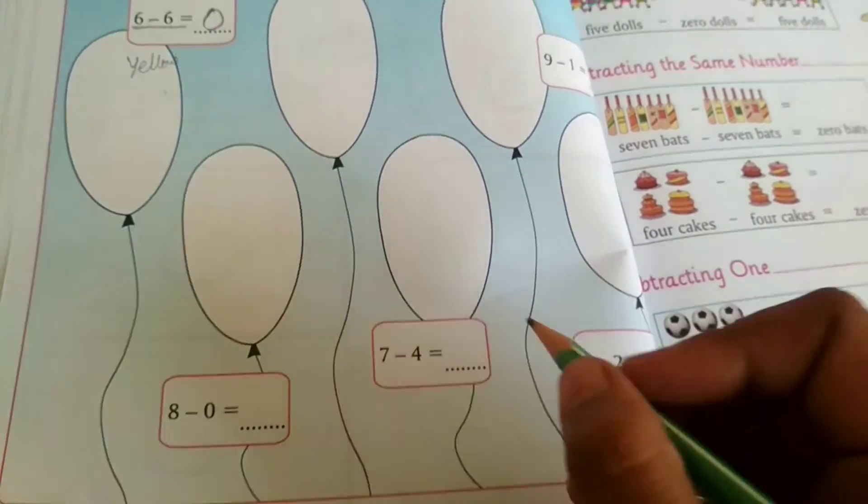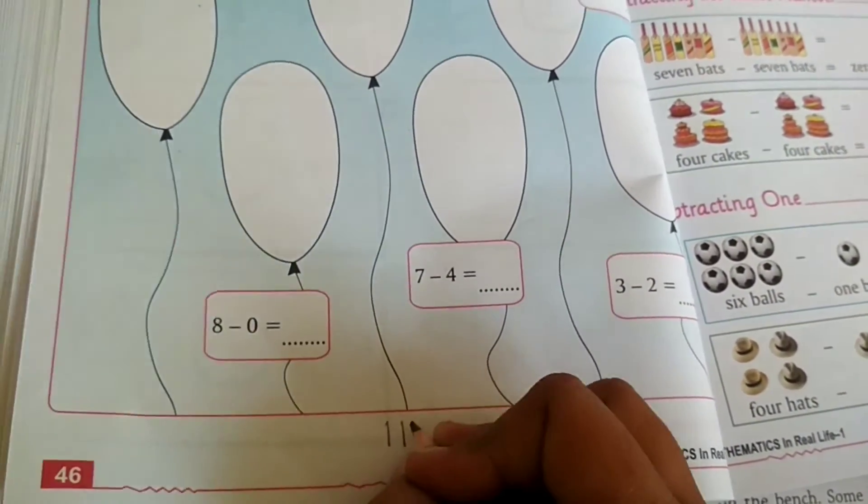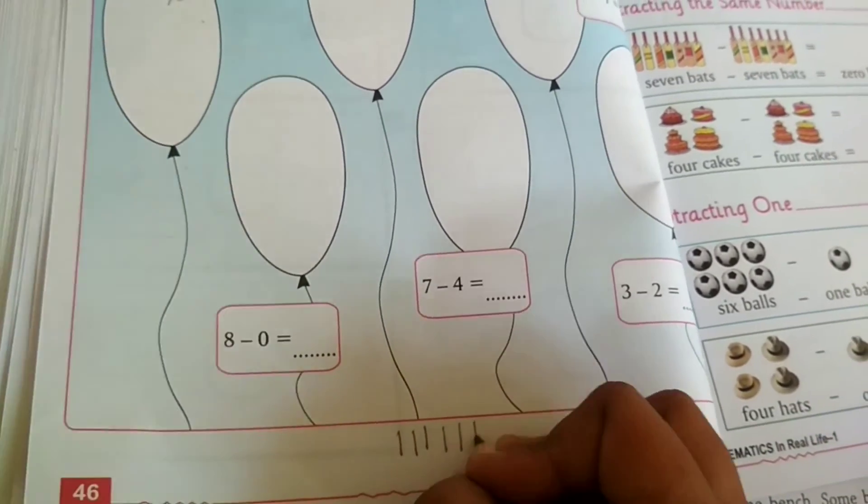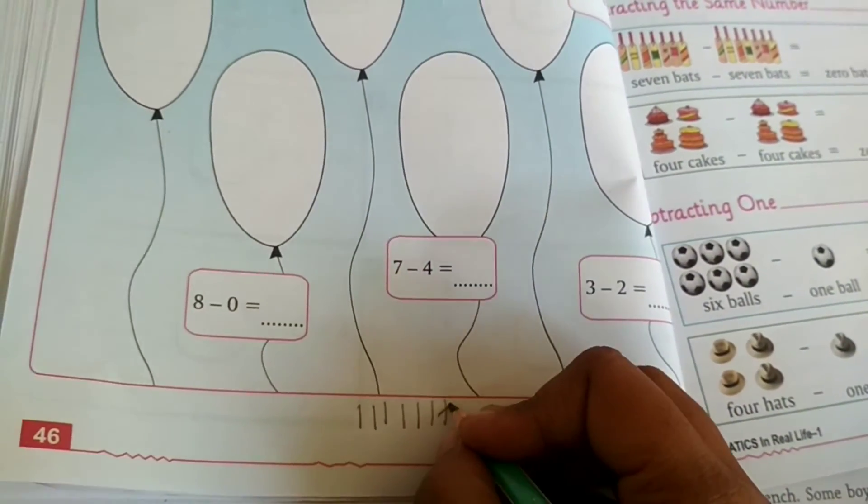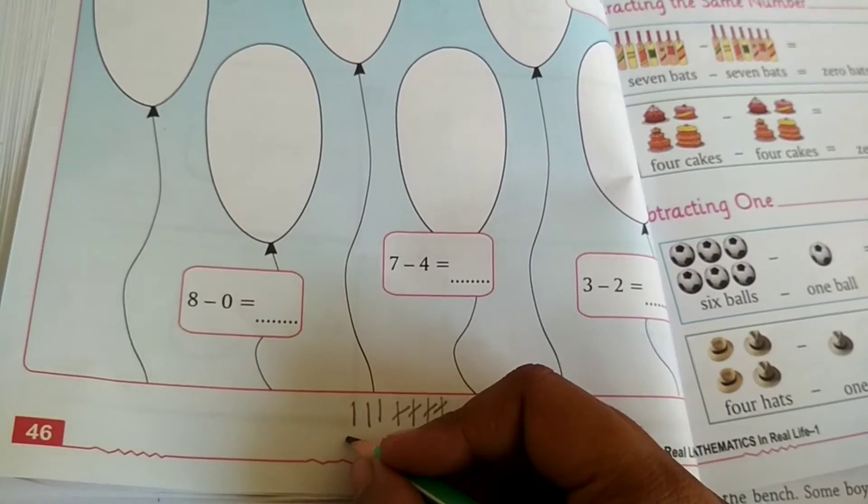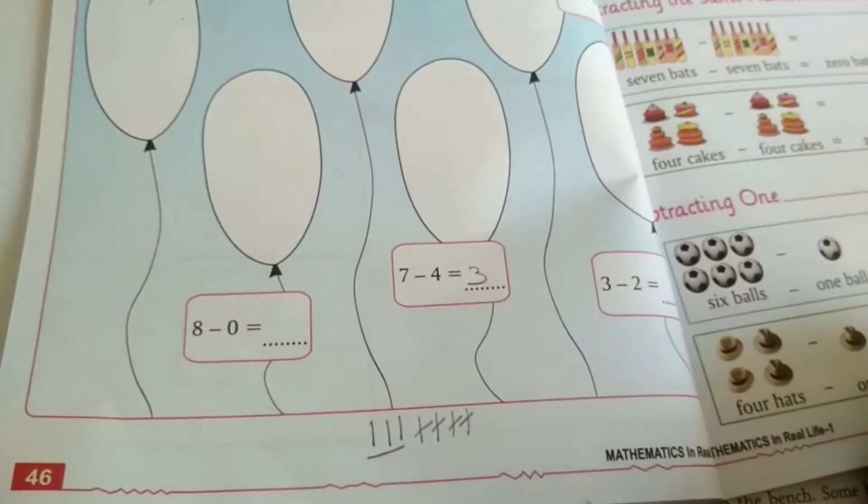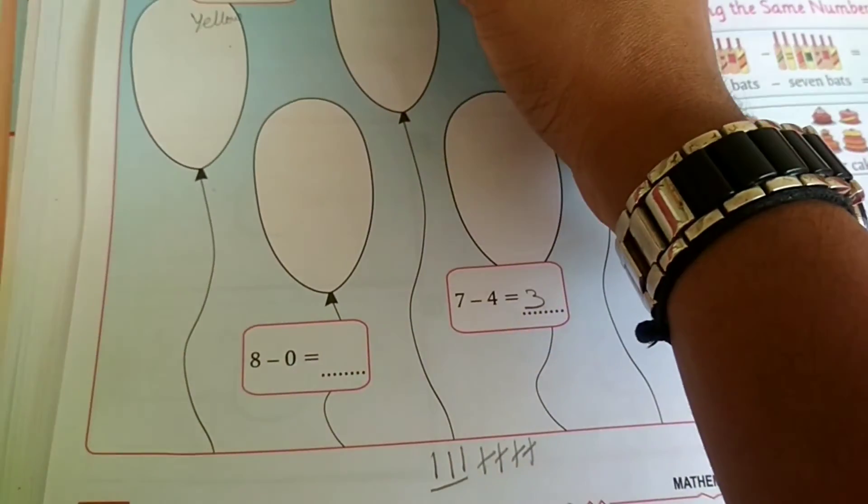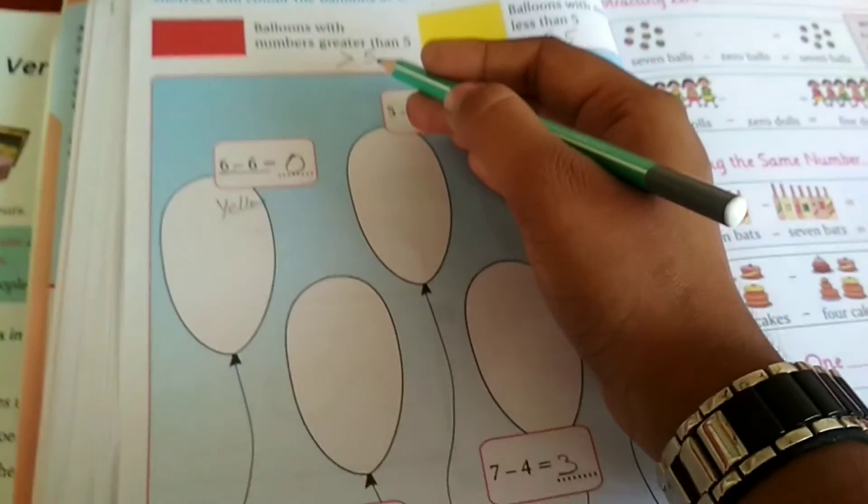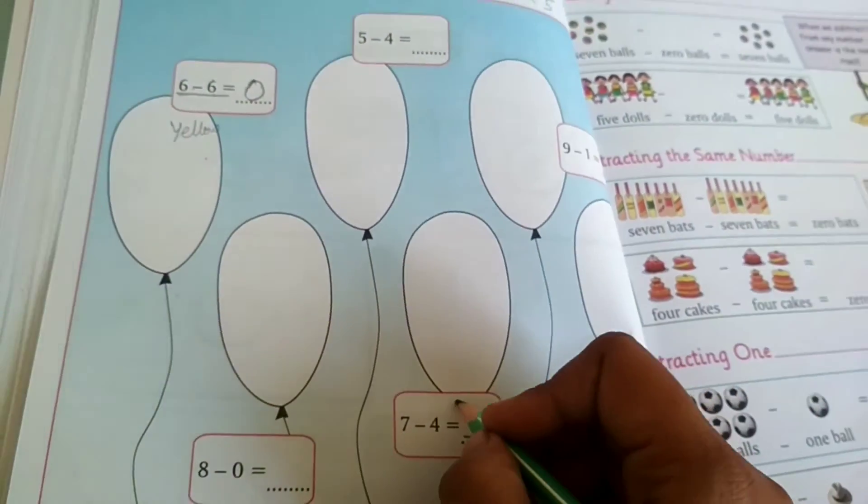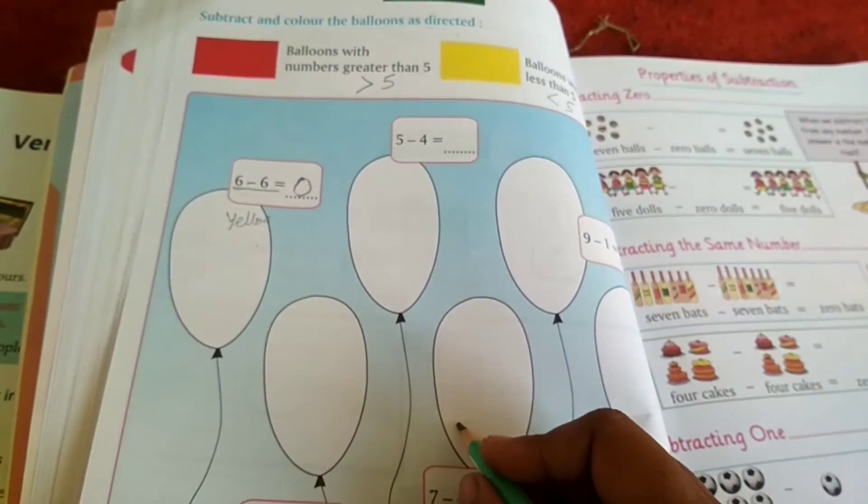It is less than 5, so this balloon will be yellow in color. Likhna nahi hai aapko, color karna hai. Then let us do this one, 7 minus 4. So 1, 2, 3, 4, 5, 6, 7 minus 1, 2, 3, 4, 3 left. So 3 is greater than 5 or less than 5? 3 is less than 5, so yellow color.